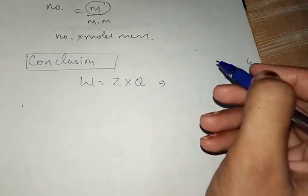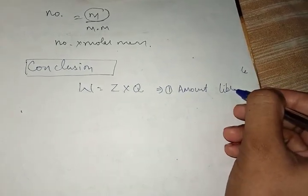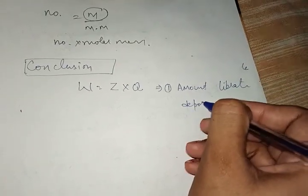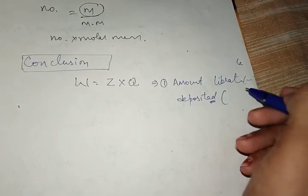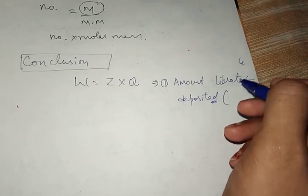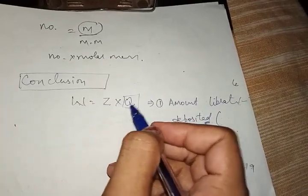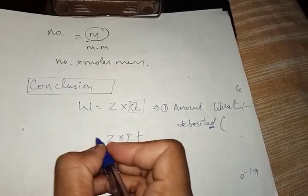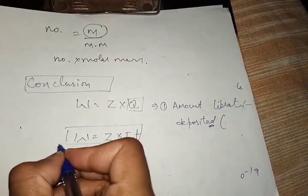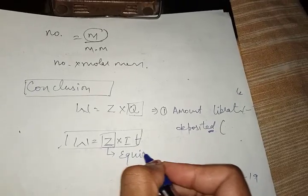Questions may ask how much amount is liberated or deposited — gases are liberated while metals like copper or sodium are deposited. Since Z is not directly given in questions, we use Z = equivalent weight divided by 96500, where equivalent weight = atomic weight divided by valency.